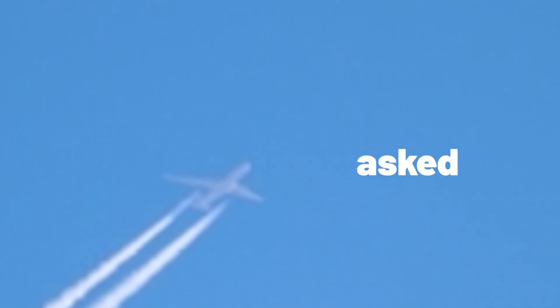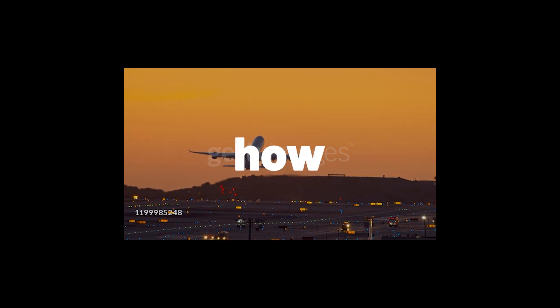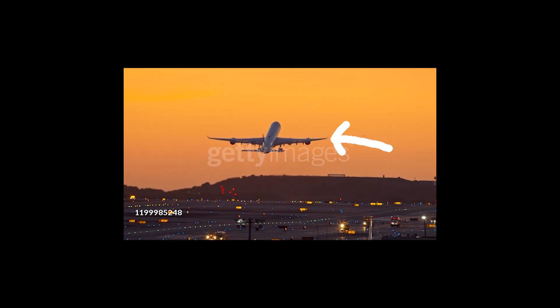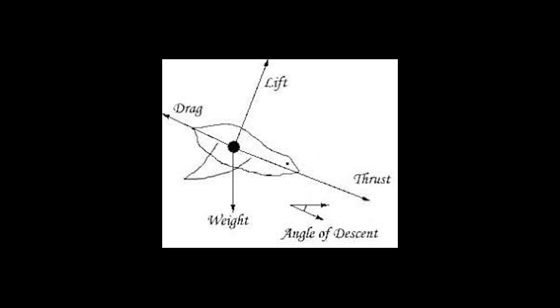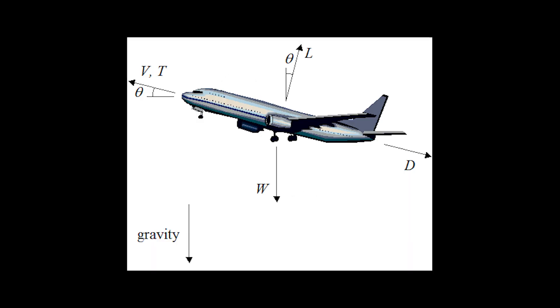Ever looked at the sky, saw a plane, and then asked yourself: how does that exact plane I'm looking at right now just fly across the sky without falling down? And then you perhaps thought of a plane lifting off. But how does it do that? Also, when it lands, how doesn't it just crash? Well, the logic — or should I say physics — behind it is actually quite simple.